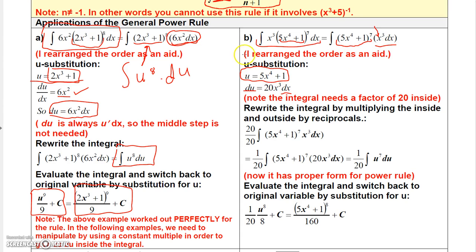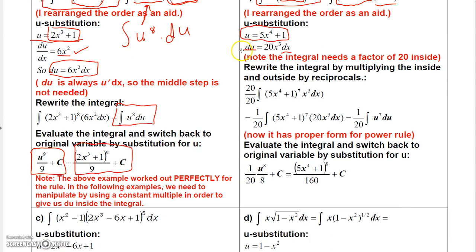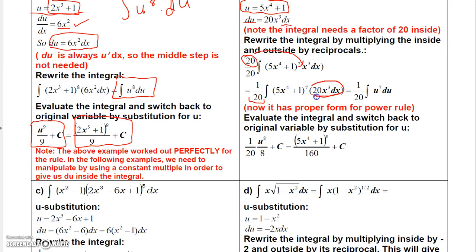There's a clever way to get a 20 in there so that it will become du. Basically, you're multiplying by 1, using 20 over 20. Since 20 over 20 doesn't change the value of the integral, you take the 20 in the numerator and move it back inside the integral — so it's right there with the 20x cubed dx. The denominator, 1 over 20, you leave on the outside. Now this portion becomes du, and this portion becomes u to the 7th power. So I have the integral of u to the 7th power du, and don't forget the 1 over 20 on the outside.